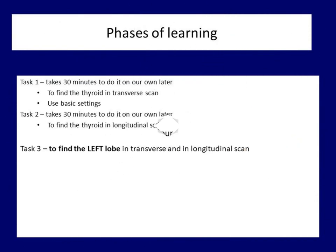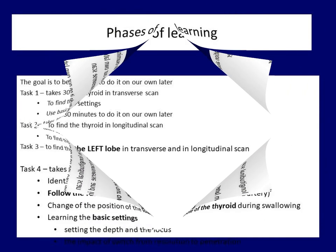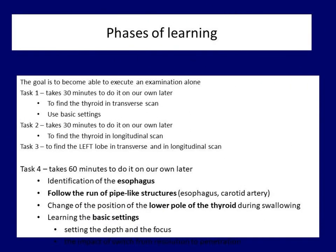The third step is to examine the left lobe in transverse and in longitudinal sections. The principles are exactly the same, but it is more difficult to examine the left lobe because this lobe is further away. If you are past the first three phases, you may want to learn a few additional techniques, which are listed in the table. This is the phase where you should also become familiar with the basic settings.